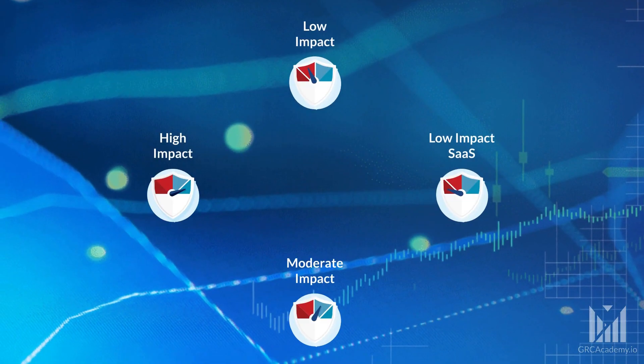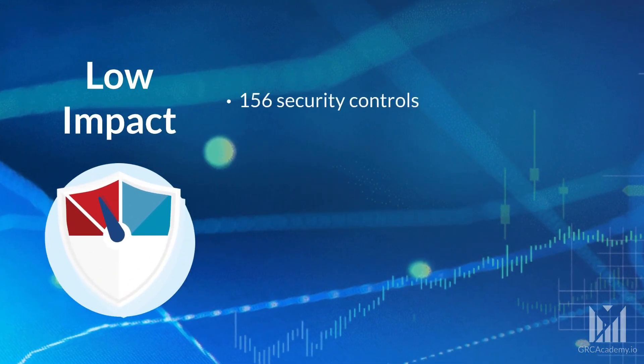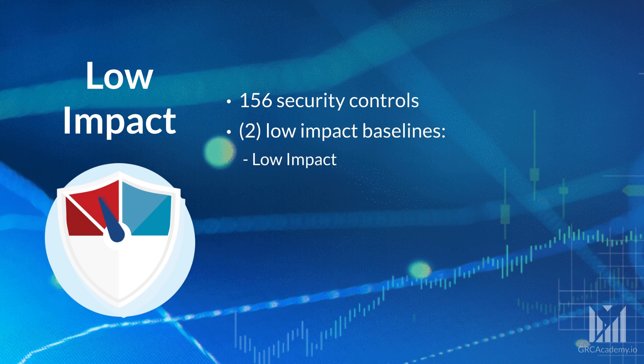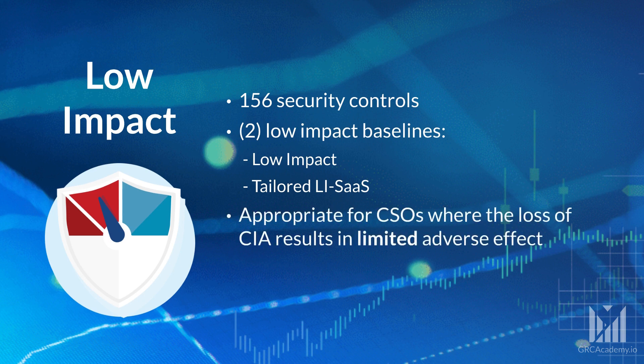Let's talk about FedRAMP's impact-level baselines. The low-impact baseline has 156 security controls. FedRAMP currently has two baselines for systems with low-impact data: the low-impact baseline and a tailored low-impact Software as a Service baseline. The low-impact baseline is used for cloud systems where the loss of confidentiality, integrity, and availability would have limited adverse effect to an agency's operations, assets, or individuals.